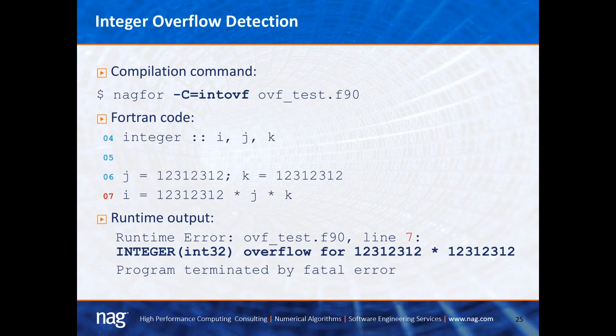The next check is integer overflow. The NAG compiler does a runtime check — not a compilation check — to detect any integer overflow, and at the time of this webinar it was the only compiler that can do this. Line 4 declares three integers, lines 6 and 7 perform a runtime calculation. The output says: 'overflow error, line 7, integer in32' — indicating it's a 32-bit integer — and the program terminates. This is a very useful feature if you're moving from 32-bit to 64-bit integers.